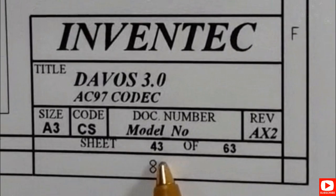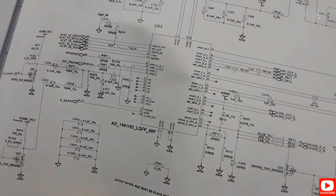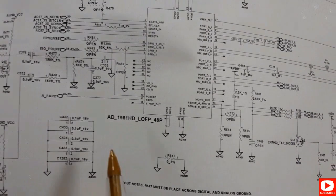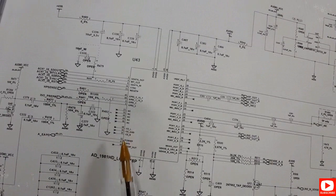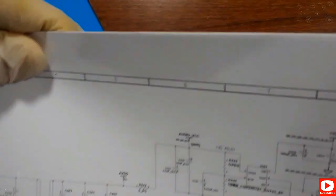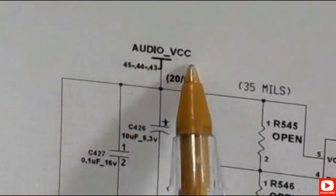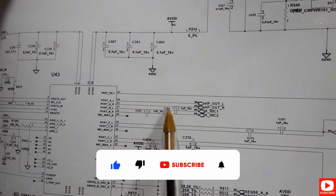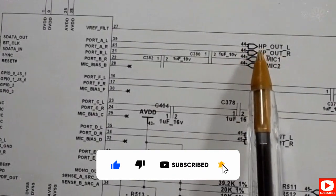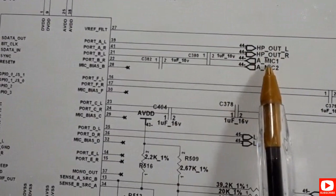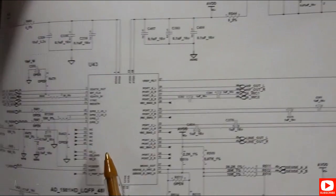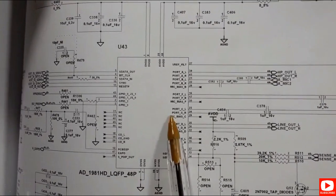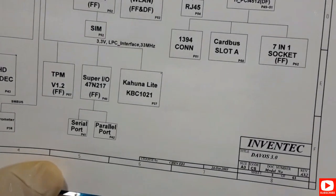We should find the circuit diagram or schematic of the Azalea codec here. This is the same reference — AD1981HD. This is the schematic of the IC we saw before. We have the audio VCC, which is the working power for this IC. Here we have HP out — output signals and input signals. This IC is connected to speakers, audio ports, audio connectors, and all audio parts on the motherboard.